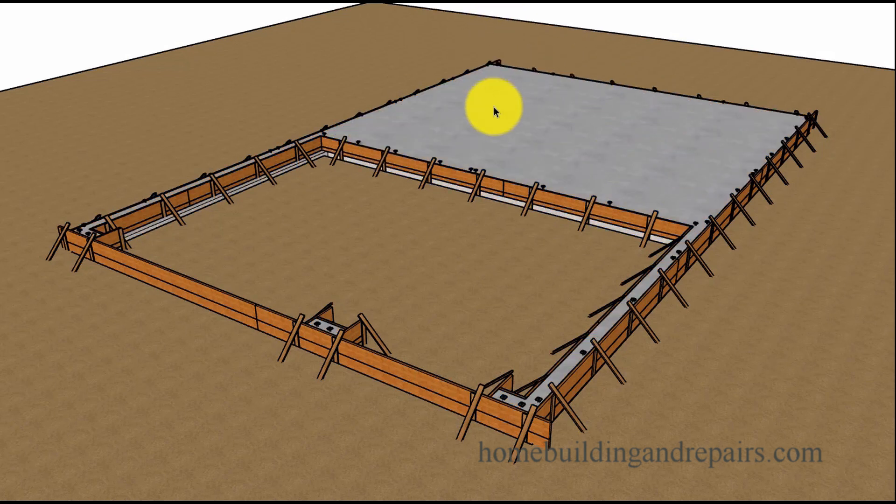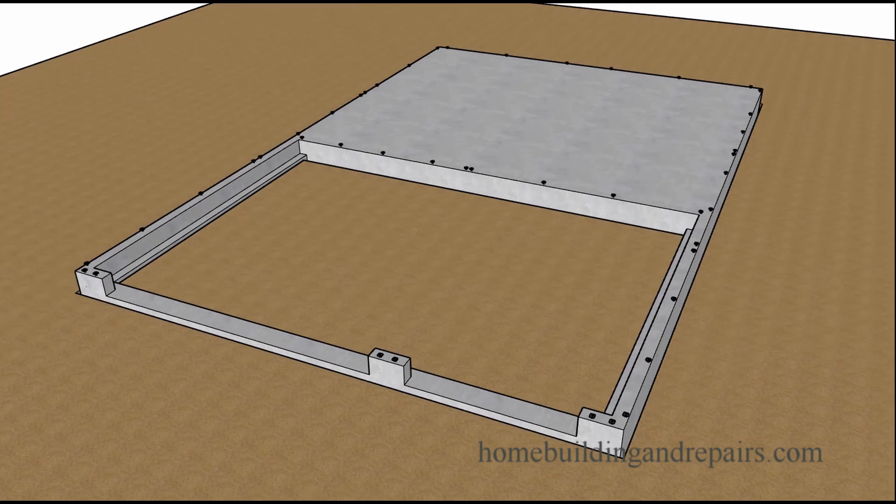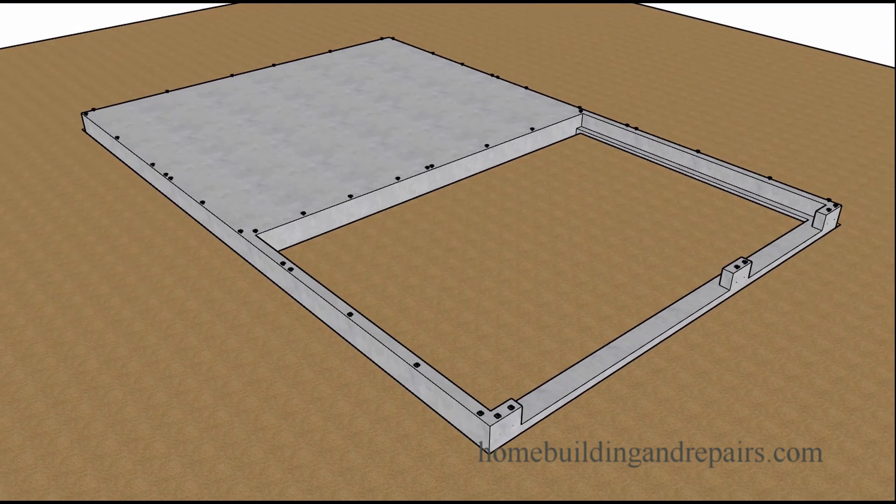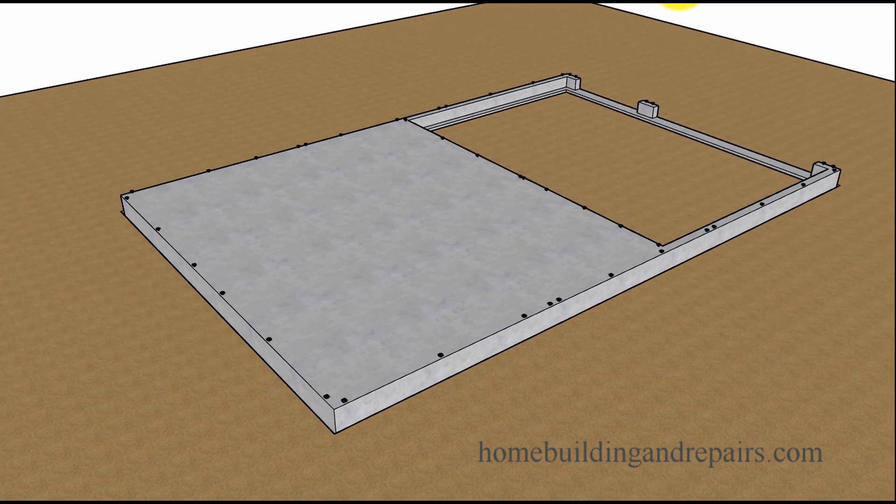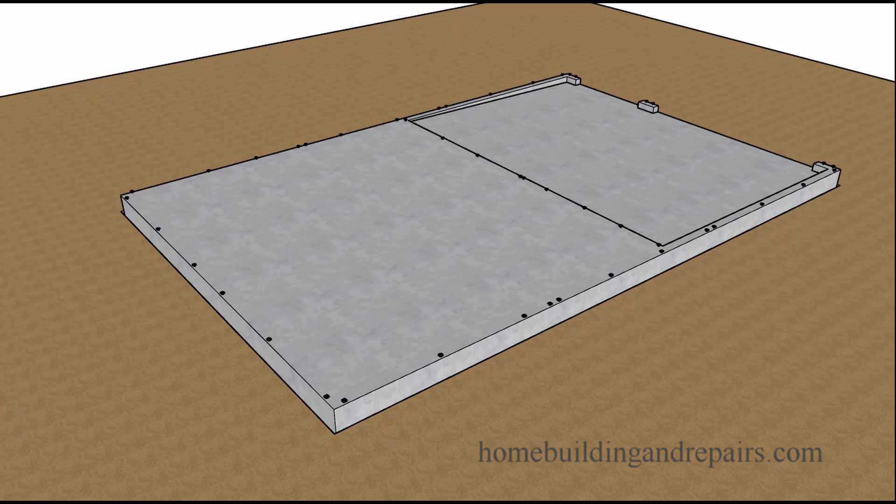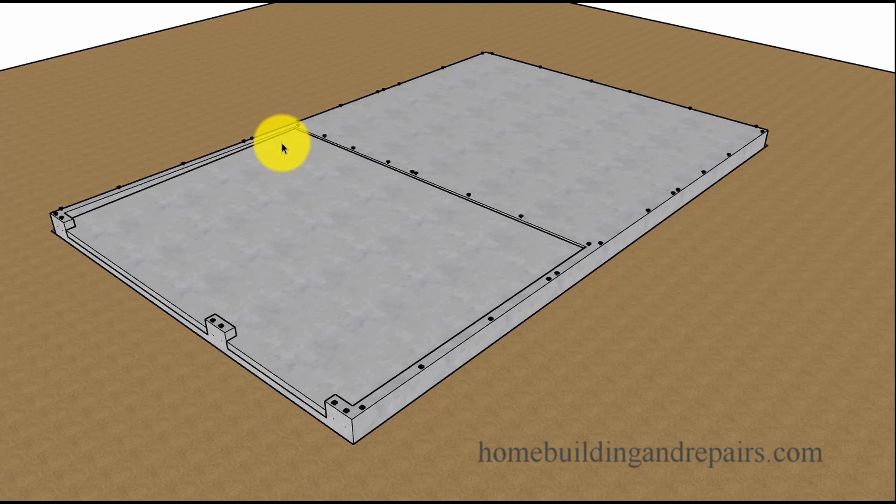And then after we pour it, it would look something like this. Let's strip our forms. And then the garage would look something like this. Our little stem walls here. Another view of it. And then we will pour the garage slab, which usually slopes about an eighth of an inch per foot. Nice to have some slope in it, of course. Quarter of an inch might be a bit much, but I think that's also acceptable.